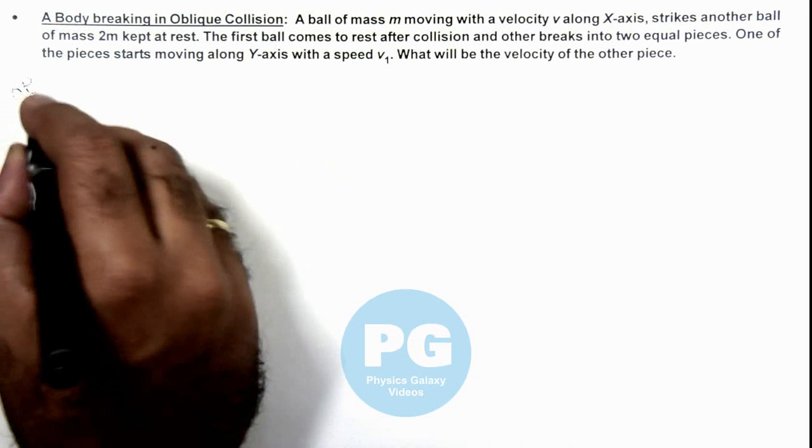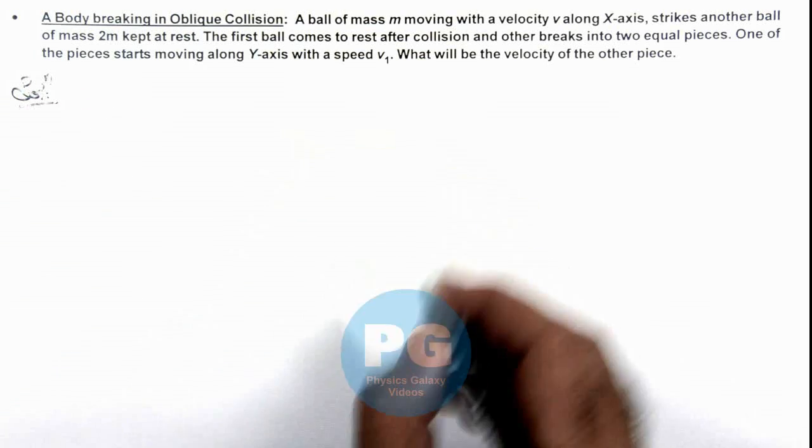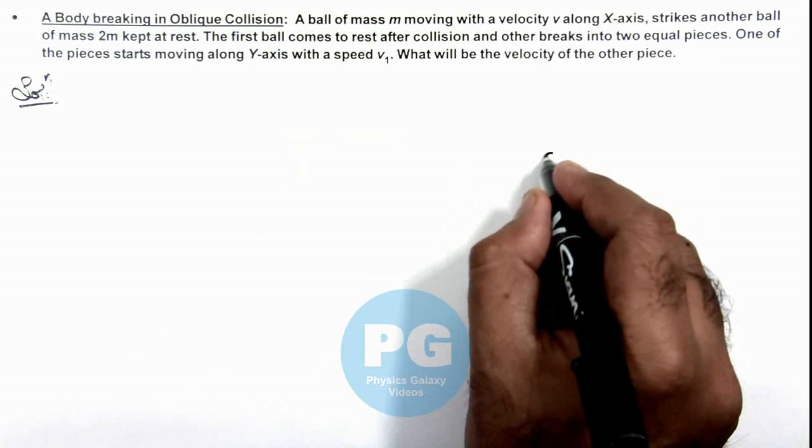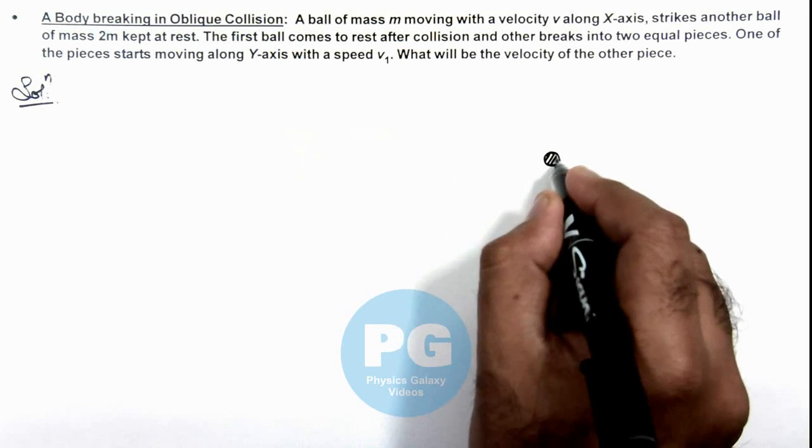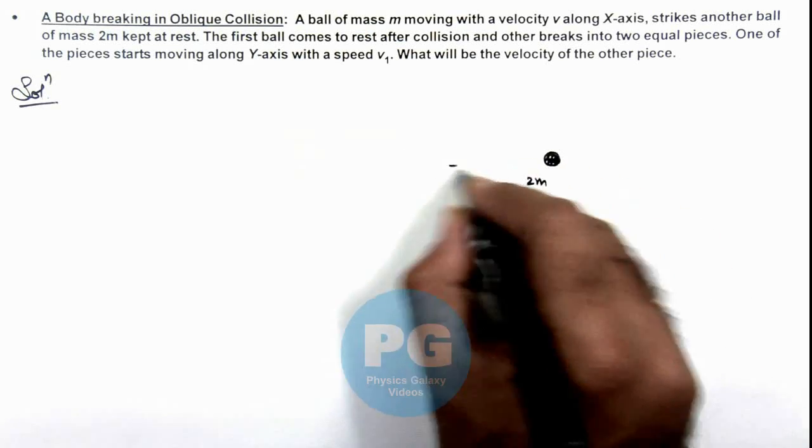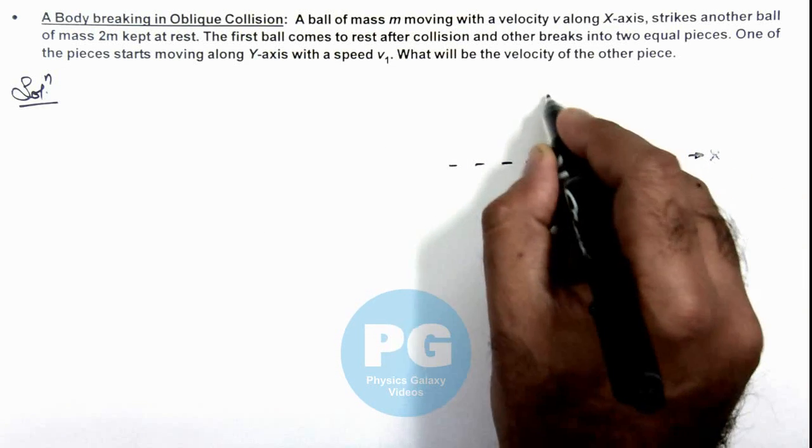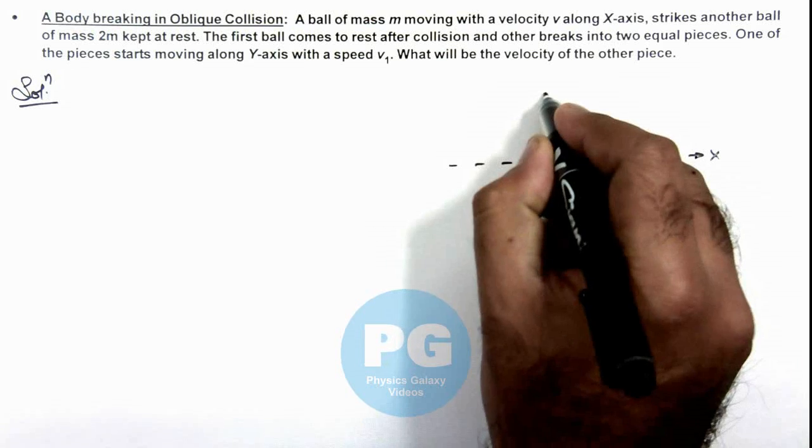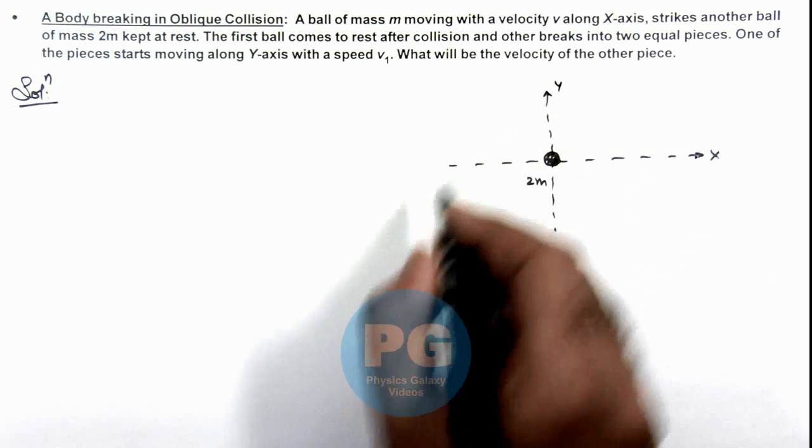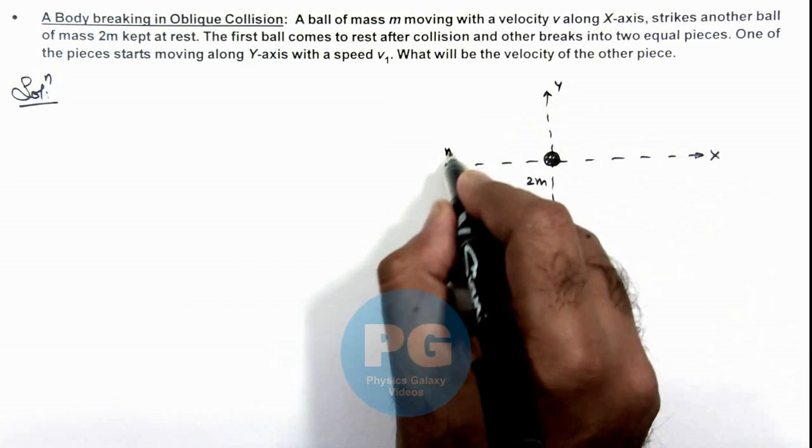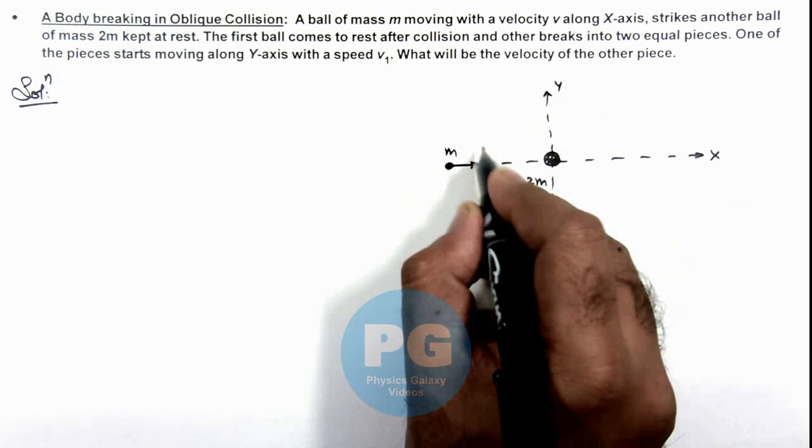Here we can draw the situation to understand it better. Say if this is the mass 2m which is at rest, and we can consider this is the direction we take as x-axis, and this is the direction we take as y-axis. And this body of mass m is moving along x-axis with a velocity v.